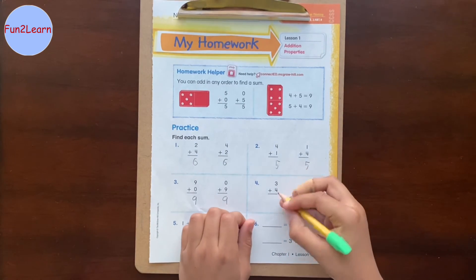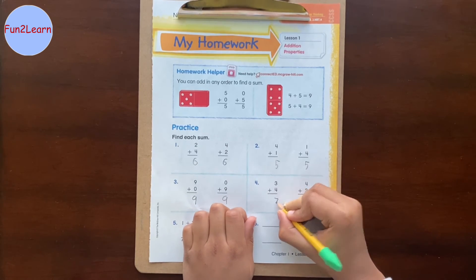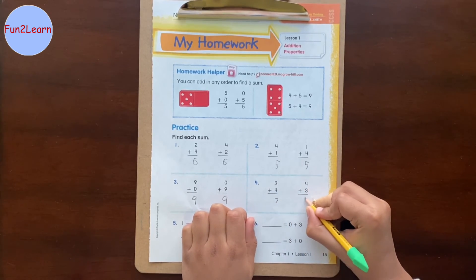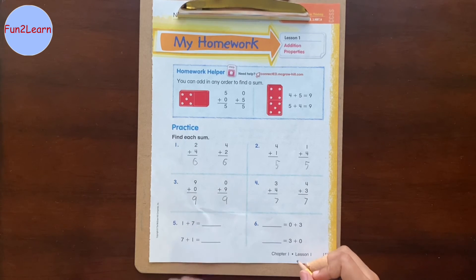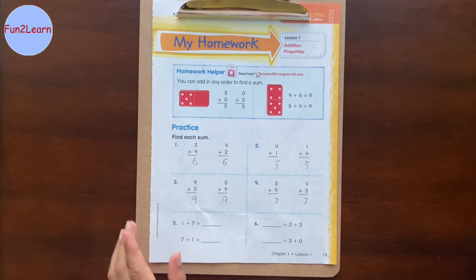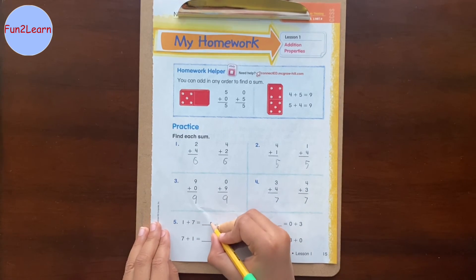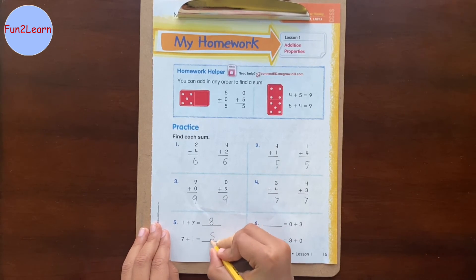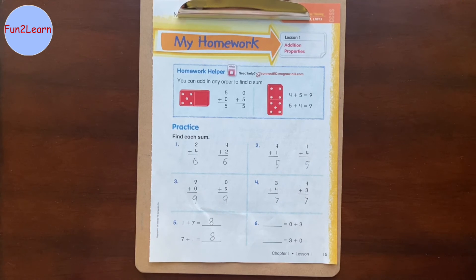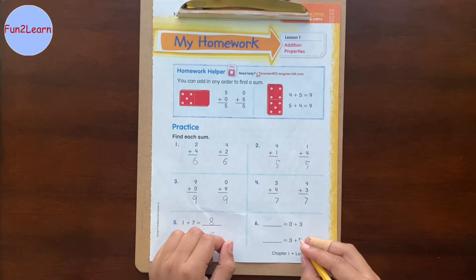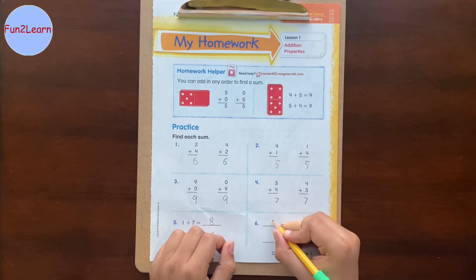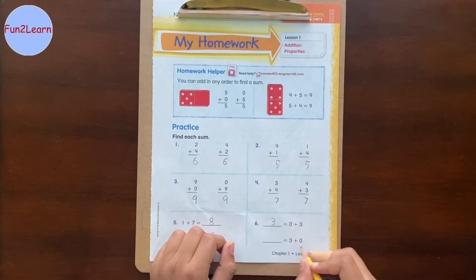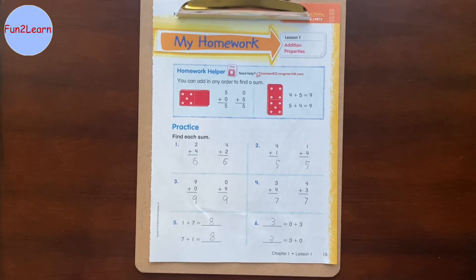3 plus 4 equals 7, so 4 plus 3 equals 7 — that's the commutative property. 1 plus 7 equals 8, so 7 plus 1 equals 8 — that's the commutative property. Question number 6: 0 plus 3 equals 3, so 3 plus 0 equals 3. That's the identity property.